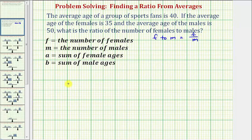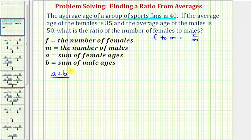And now we're going to write three equations from the given information. First, the average age of the group of sports fans is 40, which means the sum of the female ages plus the sum of the male ages, divided by the number of females and males, must equal 40. So as an equation, we would have the quantity a plus b, divided by the quantity f plus m, must equal 40.